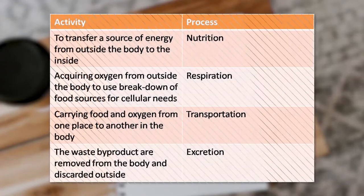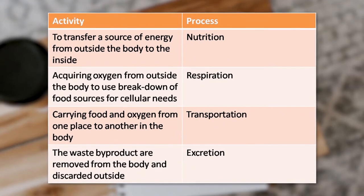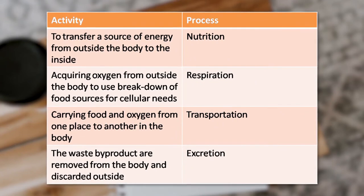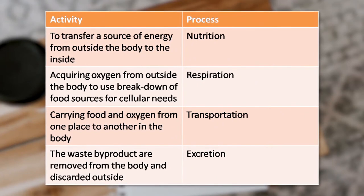You can ask students to prepare a table showing which process is required for which activity. They may be divided into small groups, and each group will discuss what processes are associated with what activities. For example, to transfer a source of energy from outside the body to inside, that is a process called nutrition.